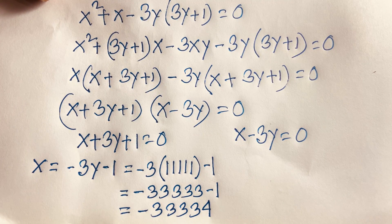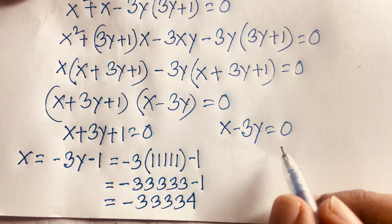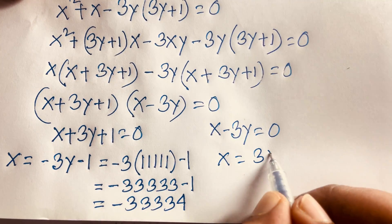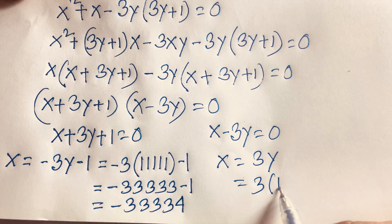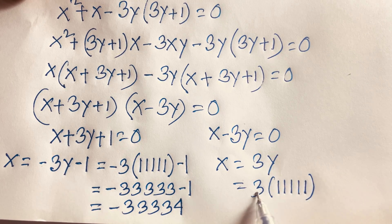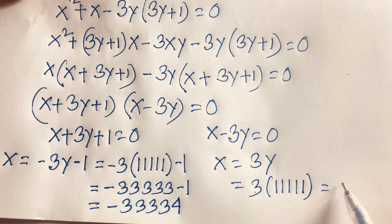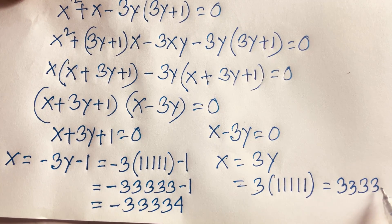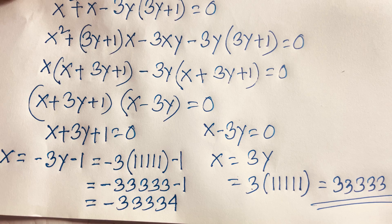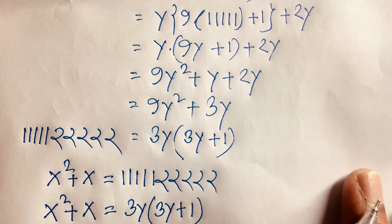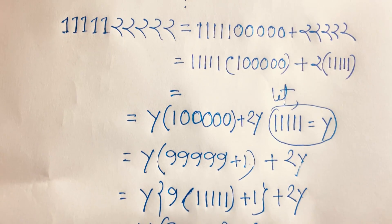From case two, x = 3y. Remember y = 11111, so x = 3 times 11111 = 33333. So this is the other value of x. Thank you all — if you enjoyed this video please subscribe to my channel for other interesting videos. Goodbye, take care.